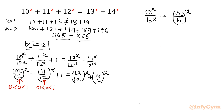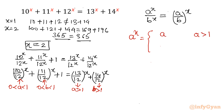On the other hand, 13/12 is greater than 1, and 14/12 is also greater than 1. So on the left-hand side, both bases are fractions between 0 and 1, while on the right-hand side, both bases are greater than 1. If you recall the graph of a^x: when a > 1, the function is monotonically increasing.